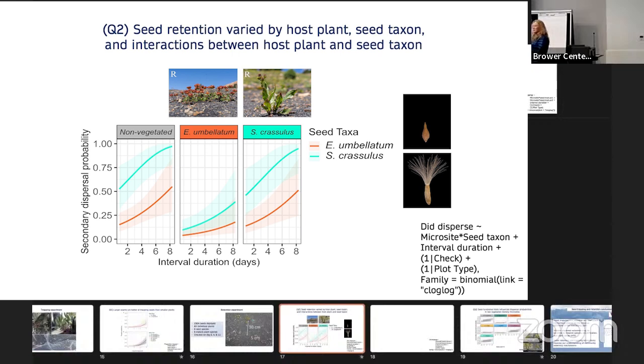And so these are all color coordinated. So Eriogonum's in the orange and Senecio is in the teal. And so it's useful first just to look at how these seeds move naturally without any obstacles in their way. And we can see that Senecio, its probability of being dispersed by the end of the experiment, so as you go to day eight or day 11, is much higher than the probability of the Eriogonum being dispersed. And maybe your gut would have also told you that if you looked at these seeds. We have the Senecio with a nice, beautiful pappus on it that catches the wind and the Eriogonum that's just this basically hard little nut.